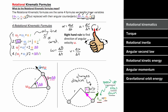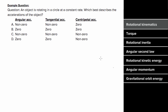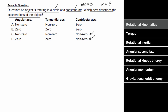What does an example problem involving the angular motion variables look like? Let's say an object is rotating in a circle at a constant rate — which would best describe the three different types of accelerations? Well, if an object is moving in a circle at all, there has to be centripetal acceleration, so that's non-zero. If it's rotating at a constant rate, there's no change in omega, so angular acceleration is zero. If angular acceleration is zero, tangential acceleration is also zero. Angular and tangential accelerations change the speed; centripetal acceleration changes the direction.